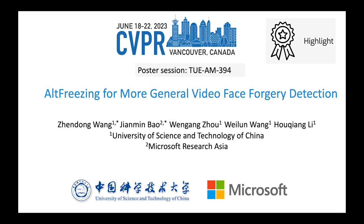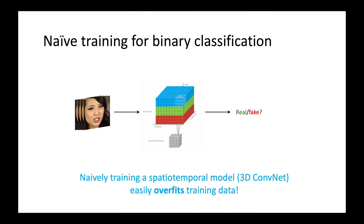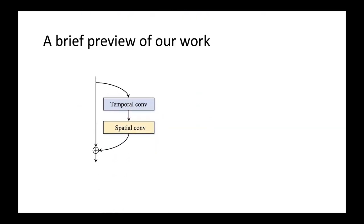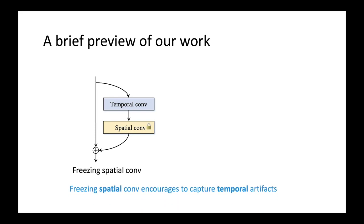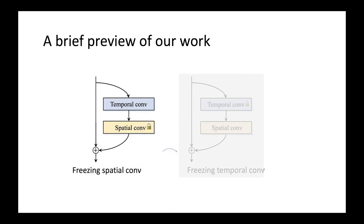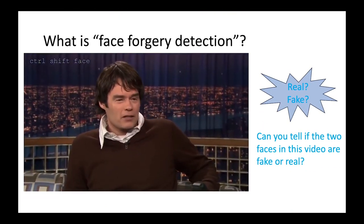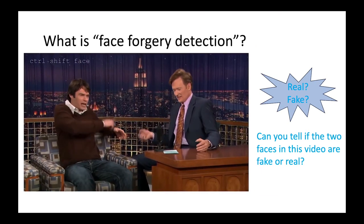Hello everyone. In this work, we present alt-freezing for more general video face forgery detection. We find that naively training a spatiotemporal model easily overfits training data. We propose a training strategy of alternately freezing spatial and temporal kernels, after dividing the kernels in a spatiotemporal network into spatial-related and temporal-related. When capturing more temporal artifacts, we freeze all the spatial convolution kernels. When capturing more spatial artifacts, we freeze all the temporal convolution kernels. The freezing of spatial and temporal kernels is alternate. With the alternately freezing strategy, the network is encouraged to capture both spatial and temporal artifacts. Face forgery detection aims to determine if faces in a video are fake or real.